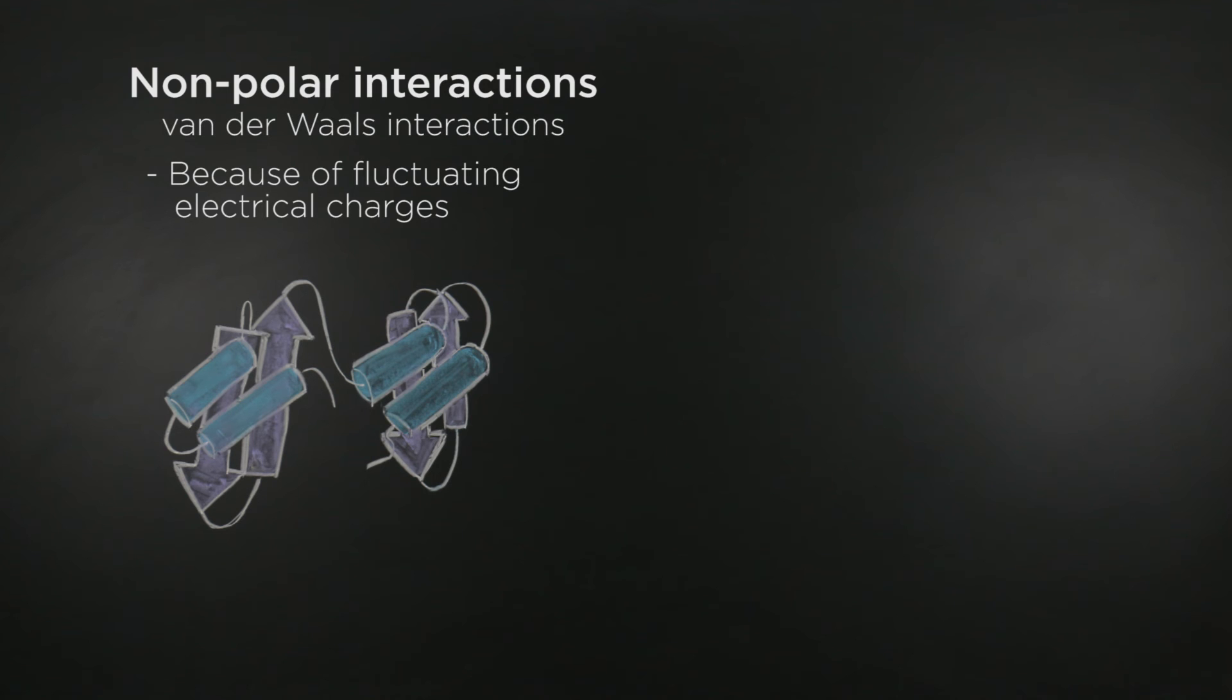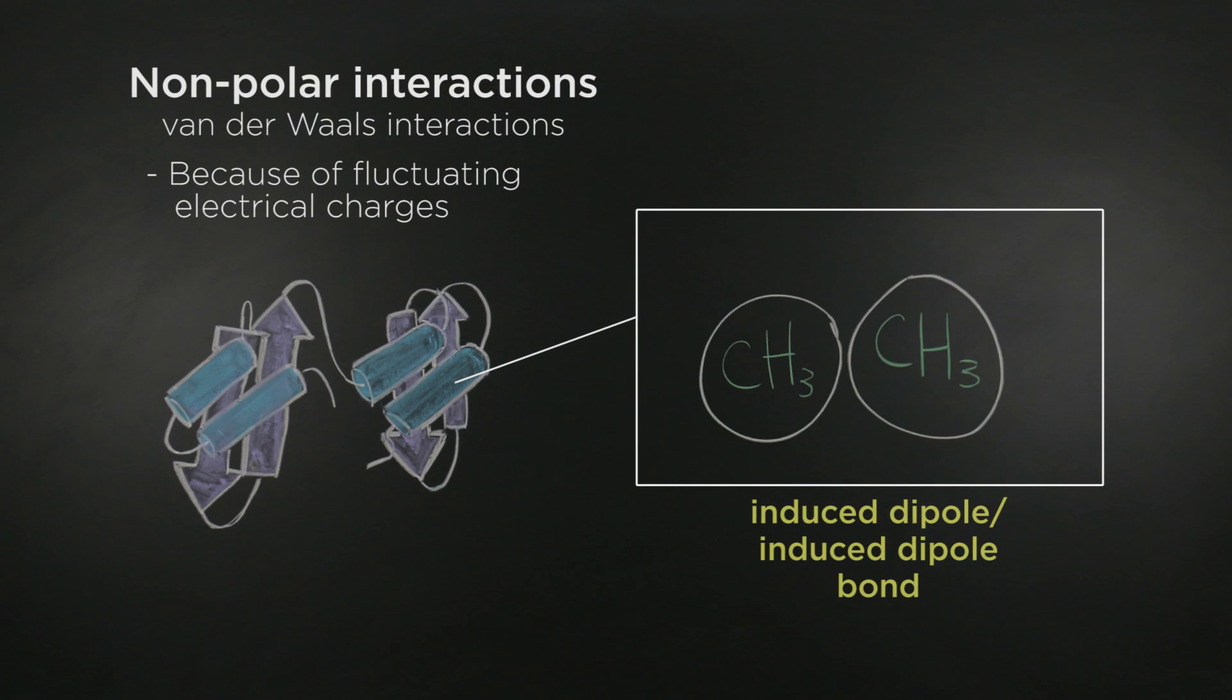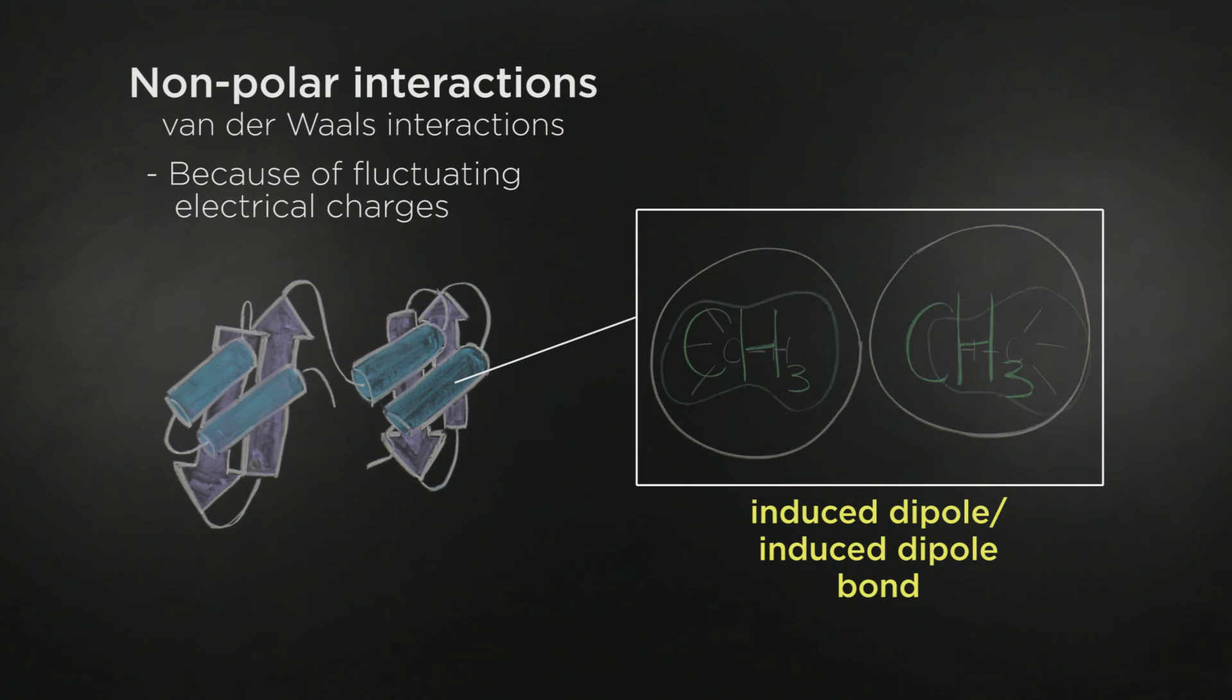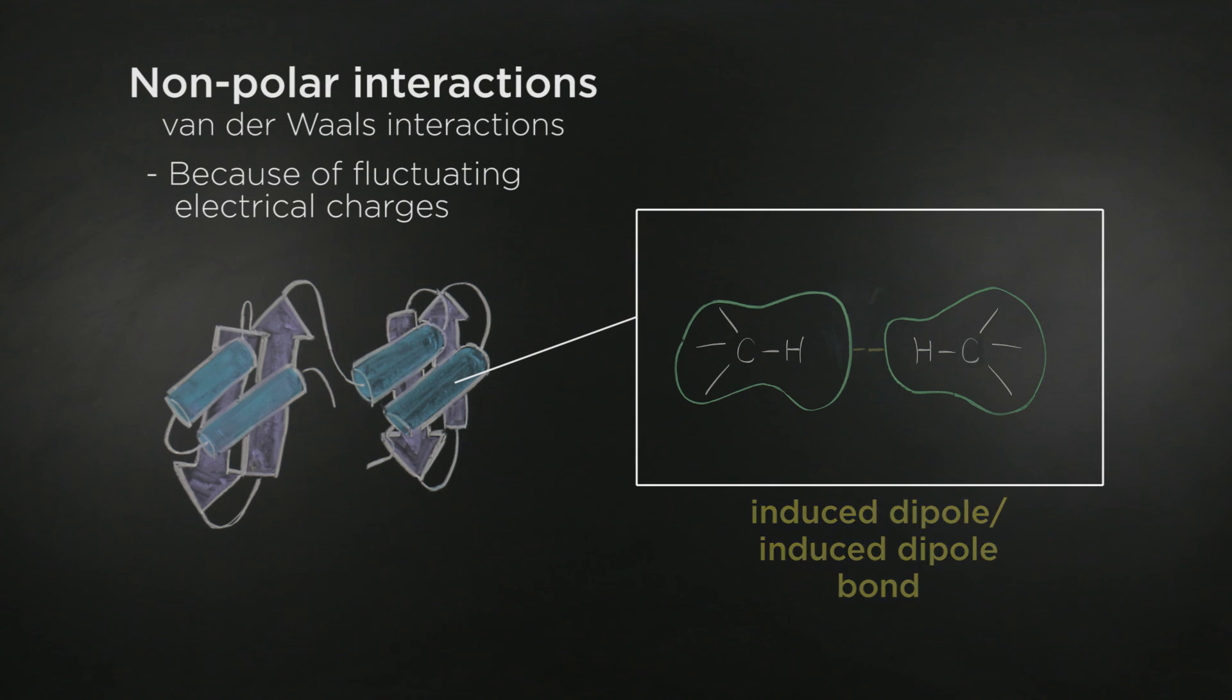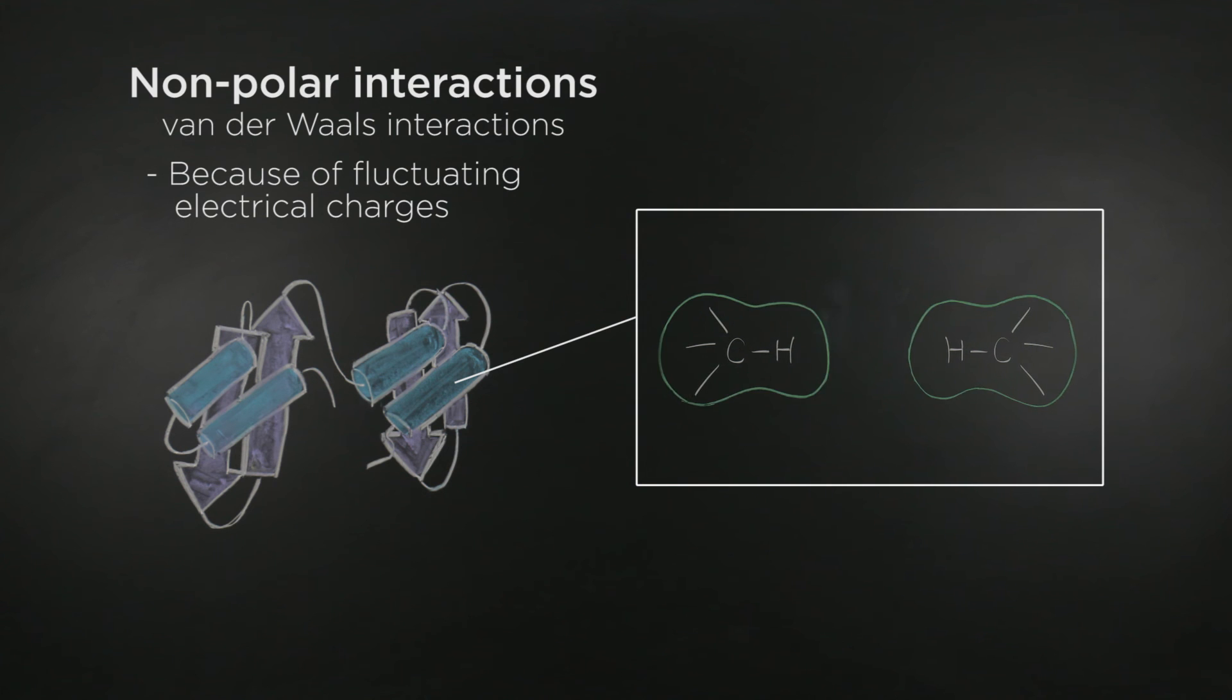One example of a van der Waals interaction is the induced dipole-induced dipole interaction. As you can see, when these two methyl groups approach one another, their electron clouds distort, creating temporary induced dipoles. These induced dipole-induced dipole bonds are transient due to the temporary nature of the dipoles.